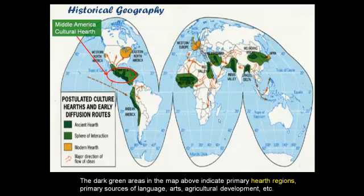The ones in dark green are the ones that have been clearly identified as being source regions for culture.